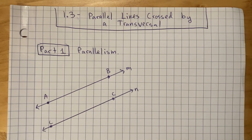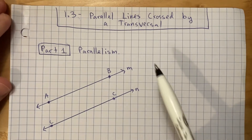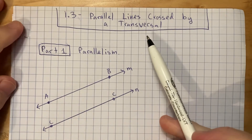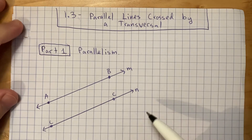Hello, students. This is a summary of Lesson 1.3, which was all about parallel lines — specifically, parallel lines crossed by a transversal.